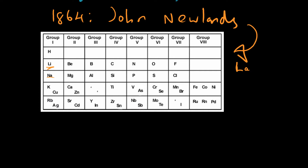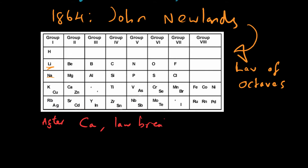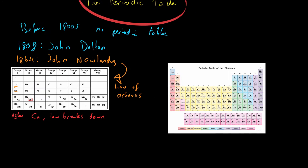However, further down the periodic table, around about after calcium, this law really breaks down. Every eight elements after calcium, we can't actually see a pattern — there are different things that come into play. The law of octaves only works up until that point. If you look at the modern periodic table, after calcium we have the transition metals in the middle, which are not in any of the standard groups. That seems obvious to us now, but back then they had no idea what was going on, so it was left to someone else to come up with a better model.